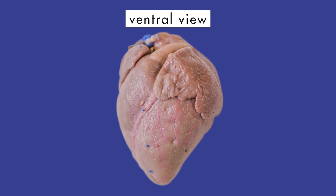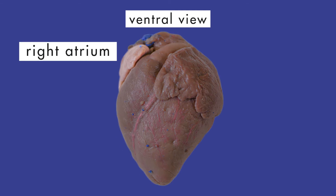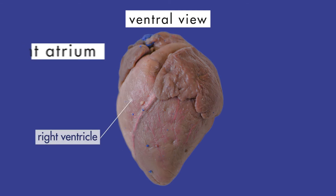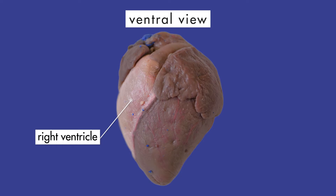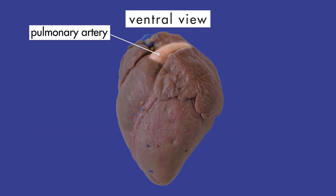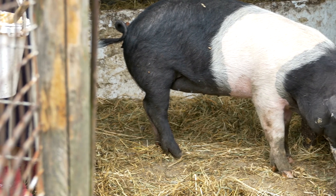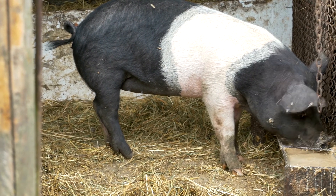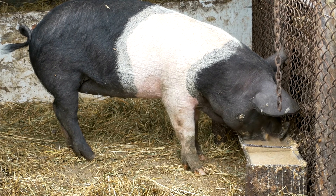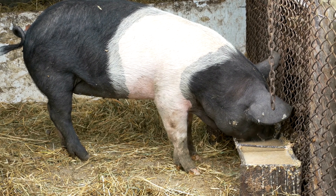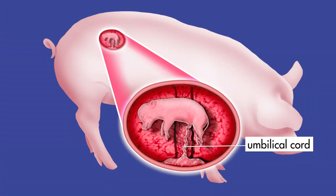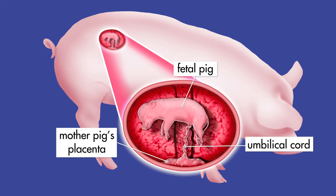Deoxygenated blood from the body enters the right atrium of the heart and flows into the right ventricle. From the right ventricle, blood flows through the pulmonary arteries, which carry blood to the lungs. In a fully developed pig, its blood would become oxygenated in the lungs and return to the left atrium of the heart through the pulmonary veins. However, since this is a fetal pig, its blood would become oxygenated through its mother's placenta.